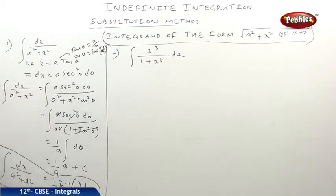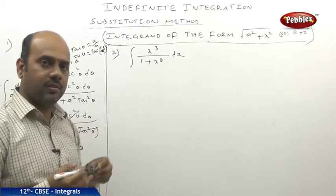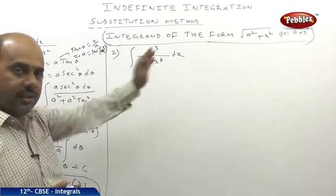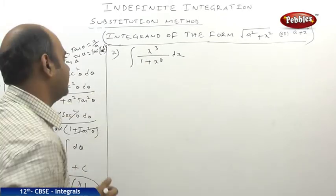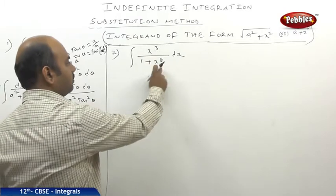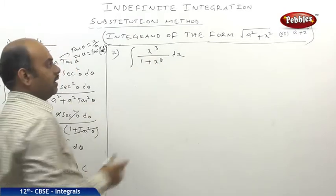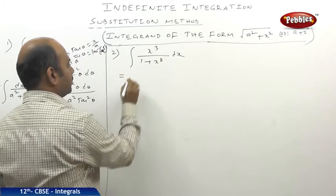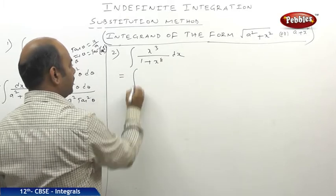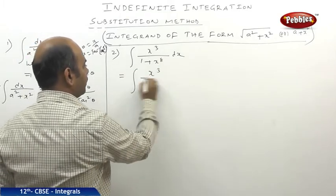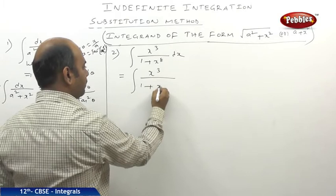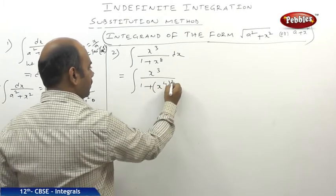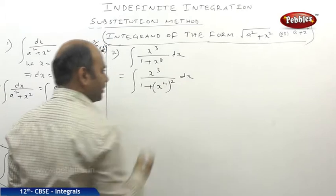I think you followed this problem. Now we shall go to another pattern under the same category. The problem is: integral of x³ by (1 plus x⁸) dx. That equals x³ by (1 plus x⁴)² dx.